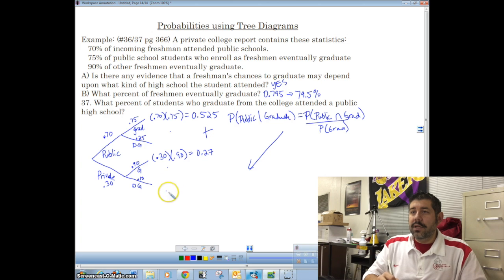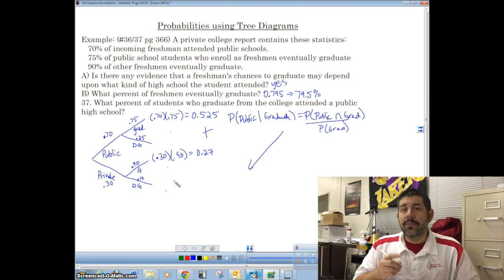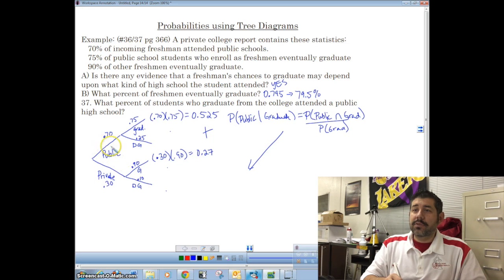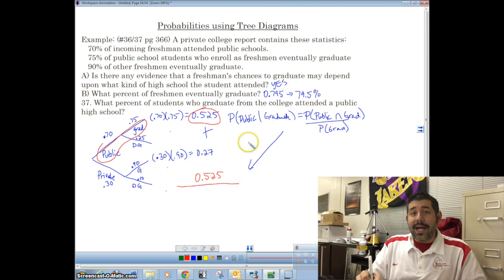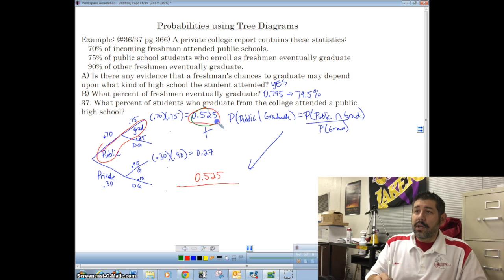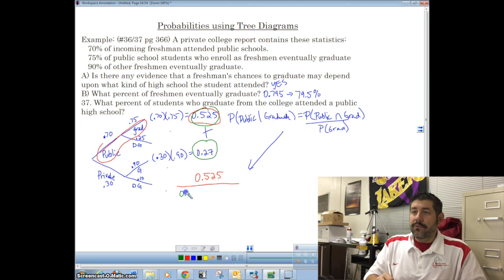The probability that this happens is the probability that they went to public school and graduated divided by the probability that they graduated. So let's take a look at what that is. The probability that they went to public school and they graduated, that's public school graduate. That probability is this right here. So 0.525 divided by the probability that they graduated. That's going to be this one plus this one. 0.525 plus 0.27.